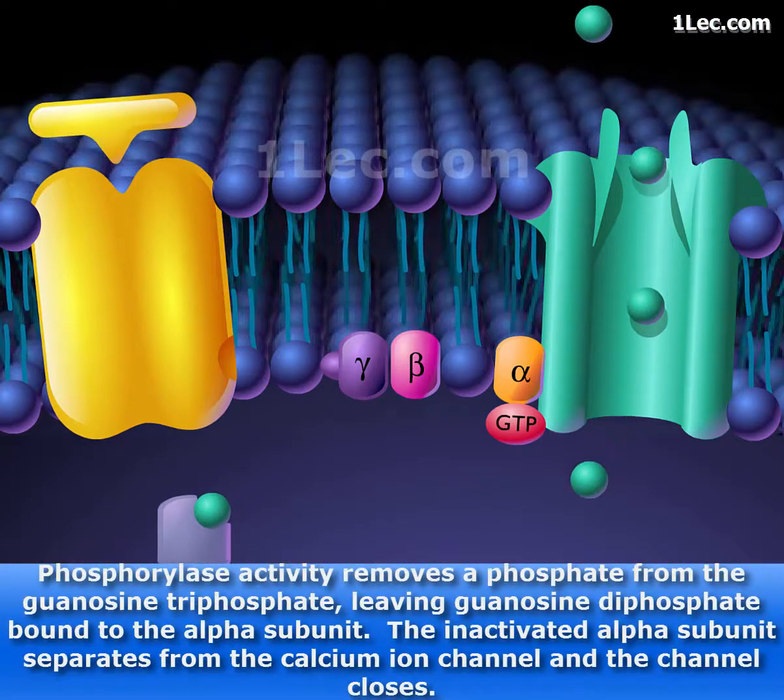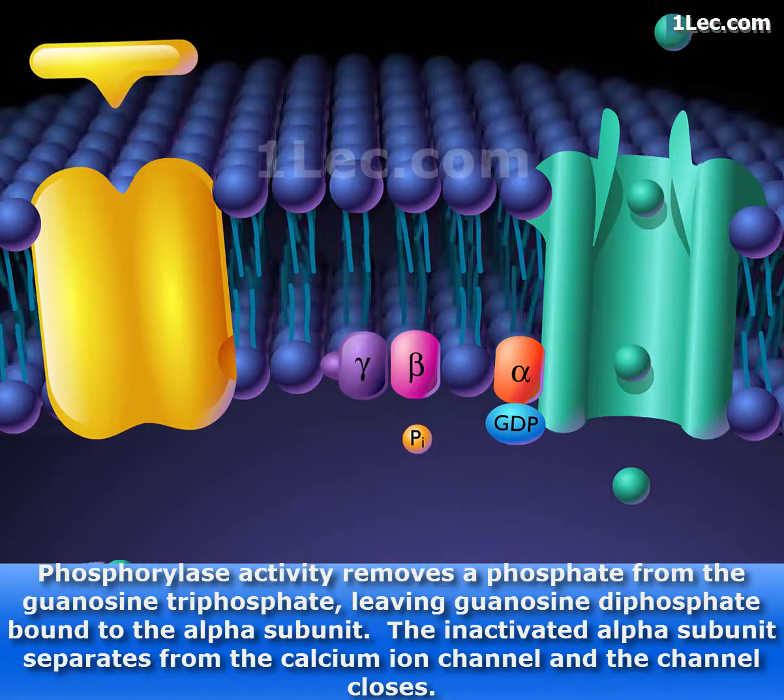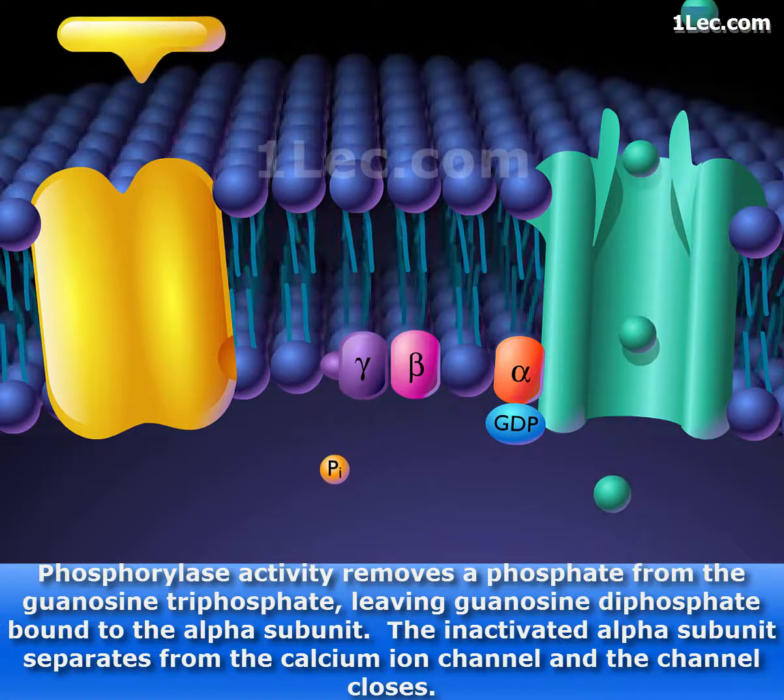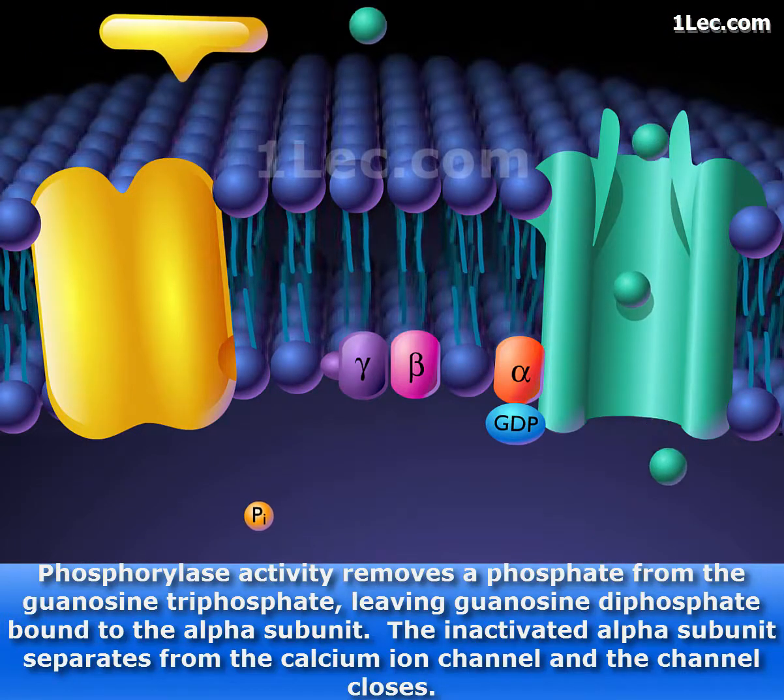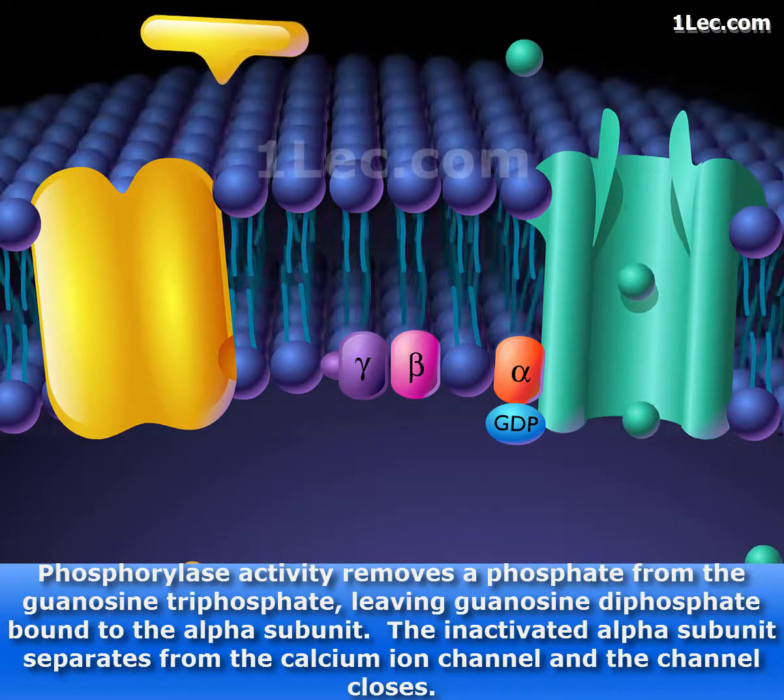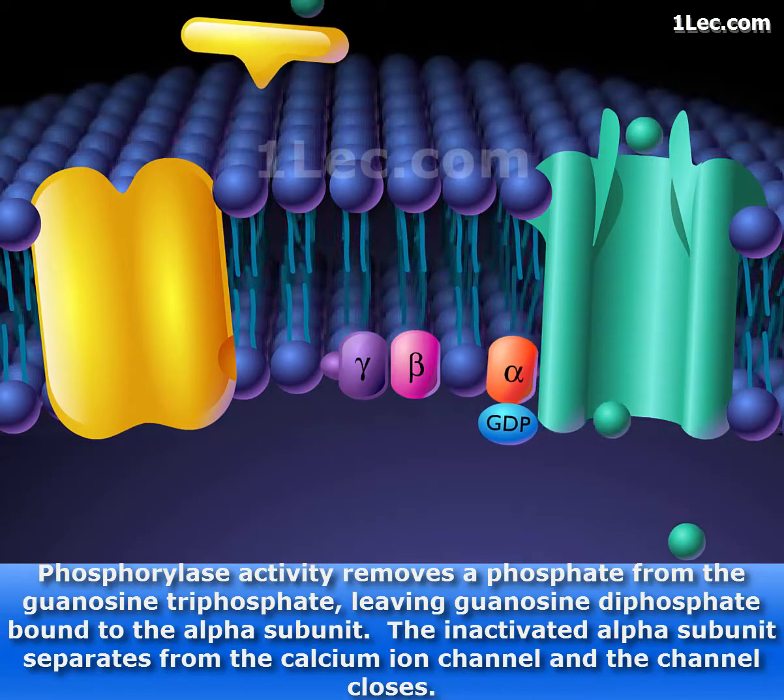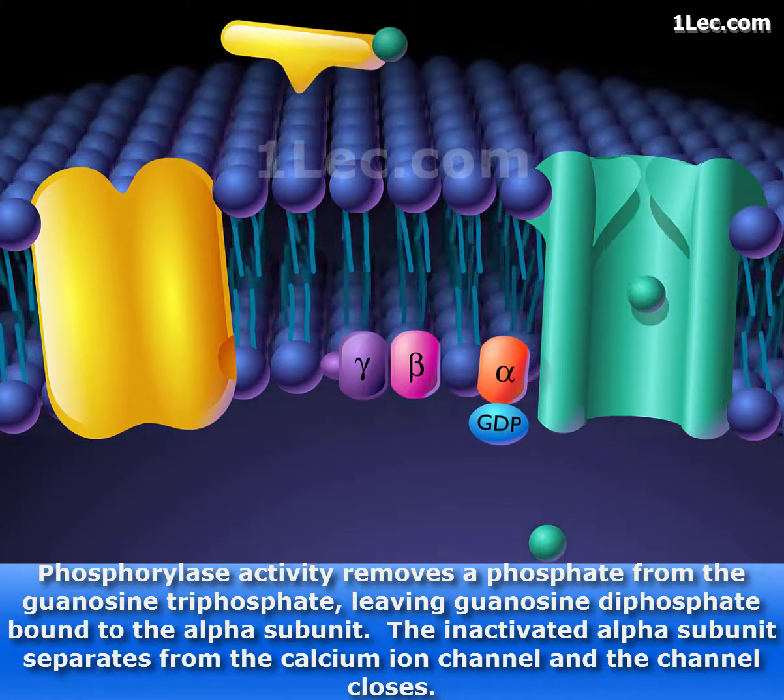Phosphorylase activity removes a phosphate from the guanosine triphosphate, leaving guanosine diphosphate bound to the alpha subunit. The inactivated alpha subunit separates from the calcium ion channel, and the channel closes.